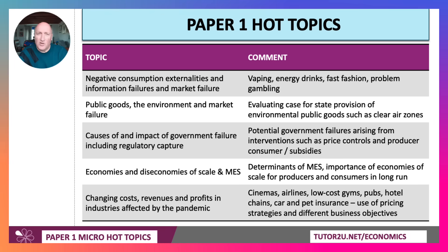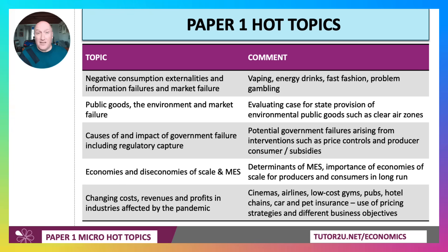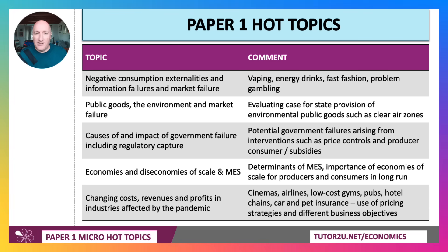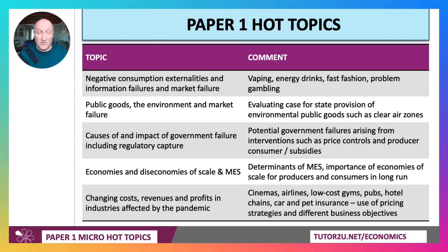There hasn't been much so far on consumption externalities, demerit goods, and linking it maybe to information failure. So perhaps this could come up. Topical areas include things like vaping, the case for a ban on disposable vapes, and the case for a tax on vaping.